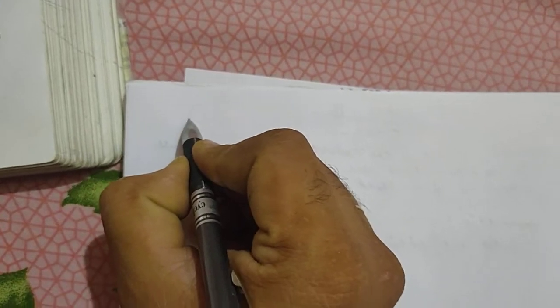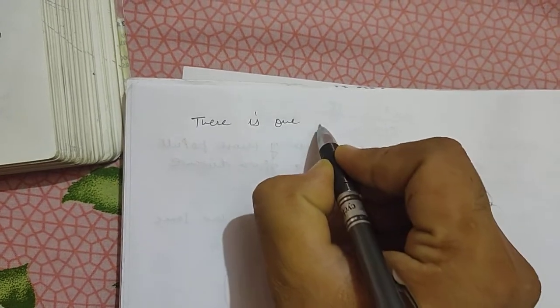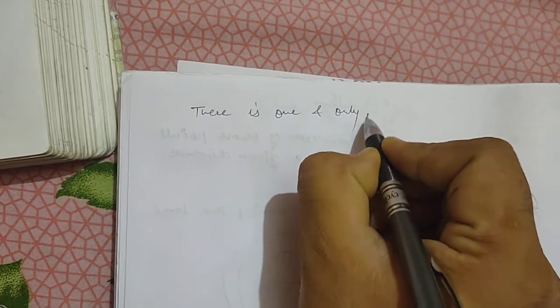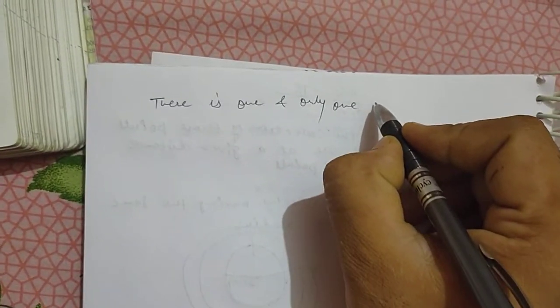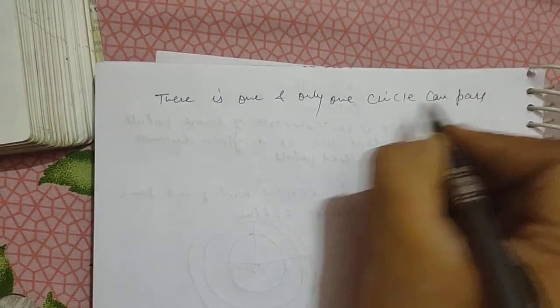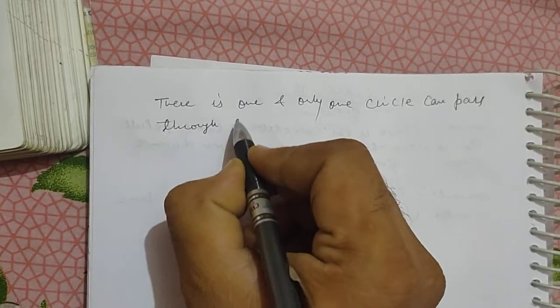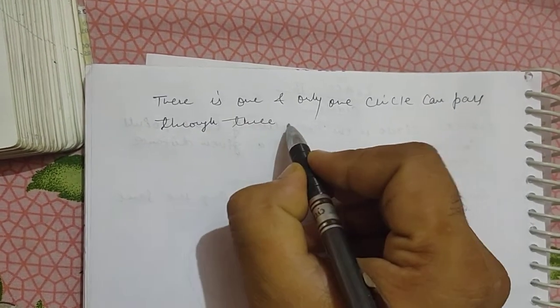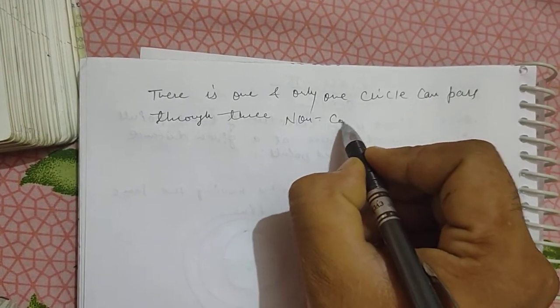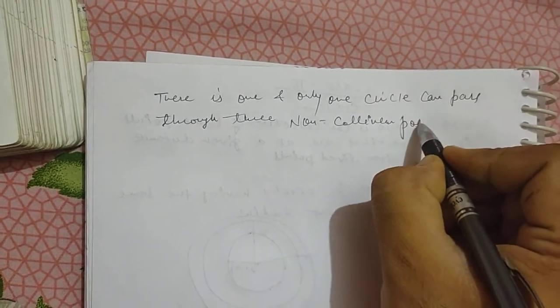Hello friends, a question about circles that is very important. There is one and only one circle that can pass through three non-collinear points. If you have three non-collinear points, then you can pass one circle through them.